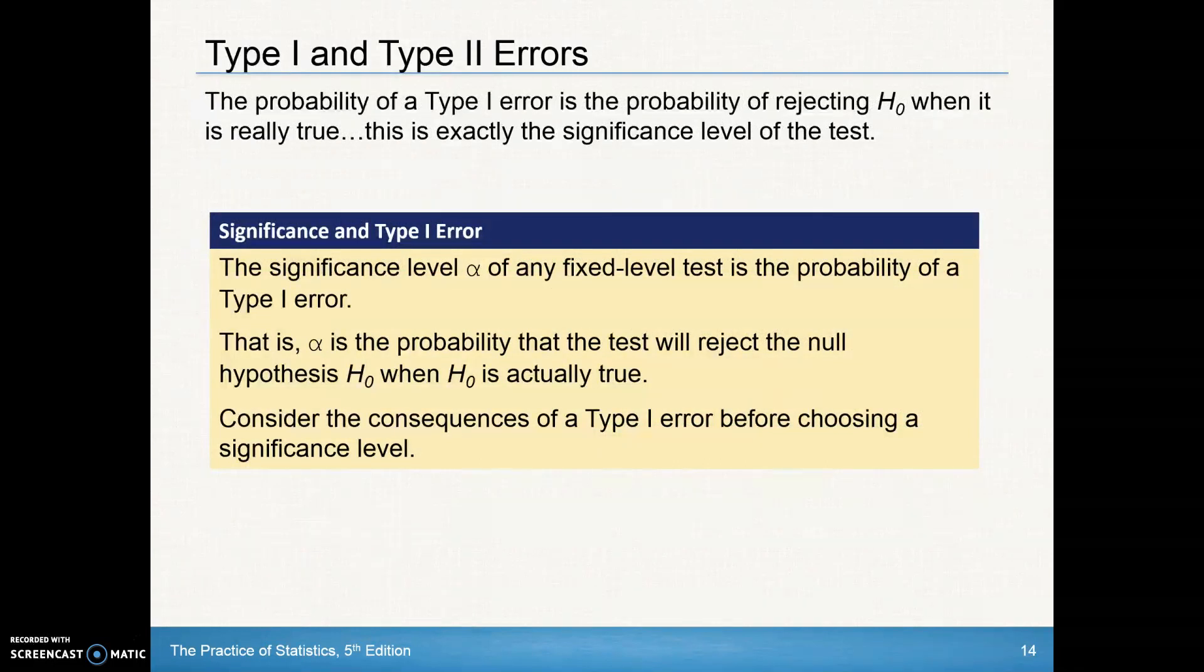Well, the probability of a type 1 error, of rejecting the null when the null is really true, that's exactly the significance level of the test. That's that alpha that you set. And again, a lot of times we'll set that alpha to be 0.05.